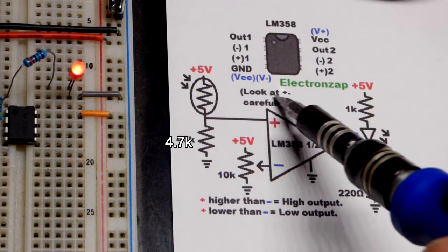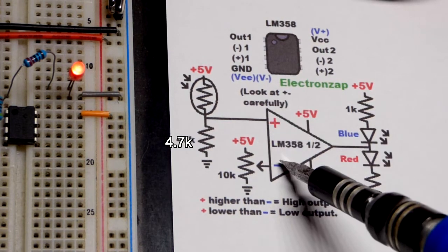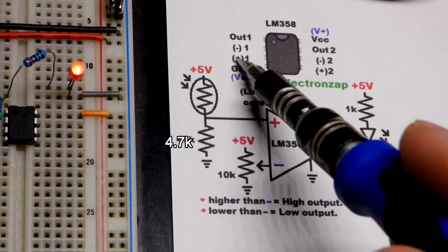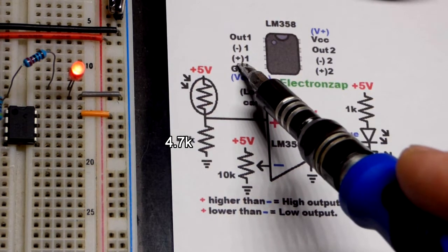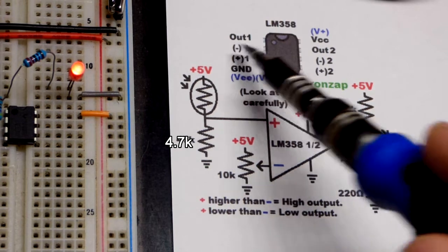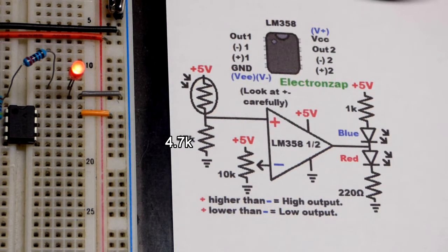And another thing to notice. I always look carefully where the plus and minus is on the schematic there. So non inverting inverting because with this particular op amp you can see the non inverting is below the inverting whereas it's the opposite on the schematic. So I always pay close attention to that.